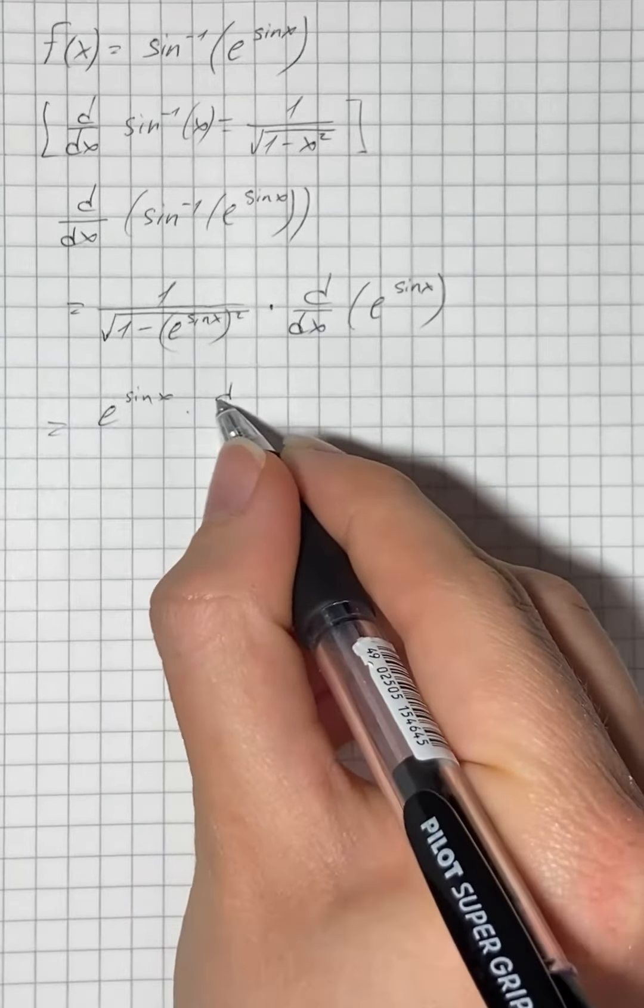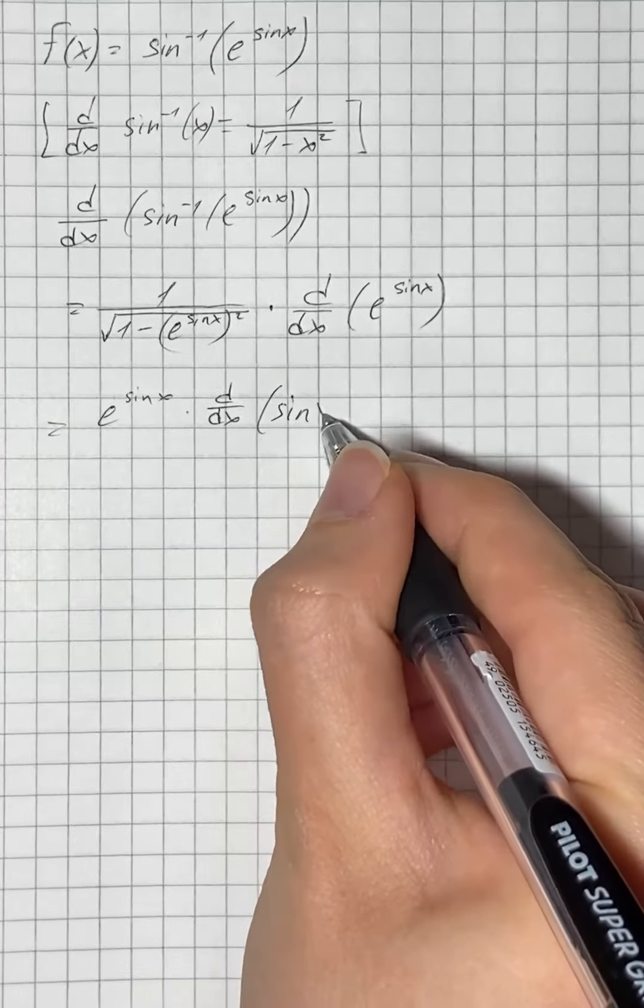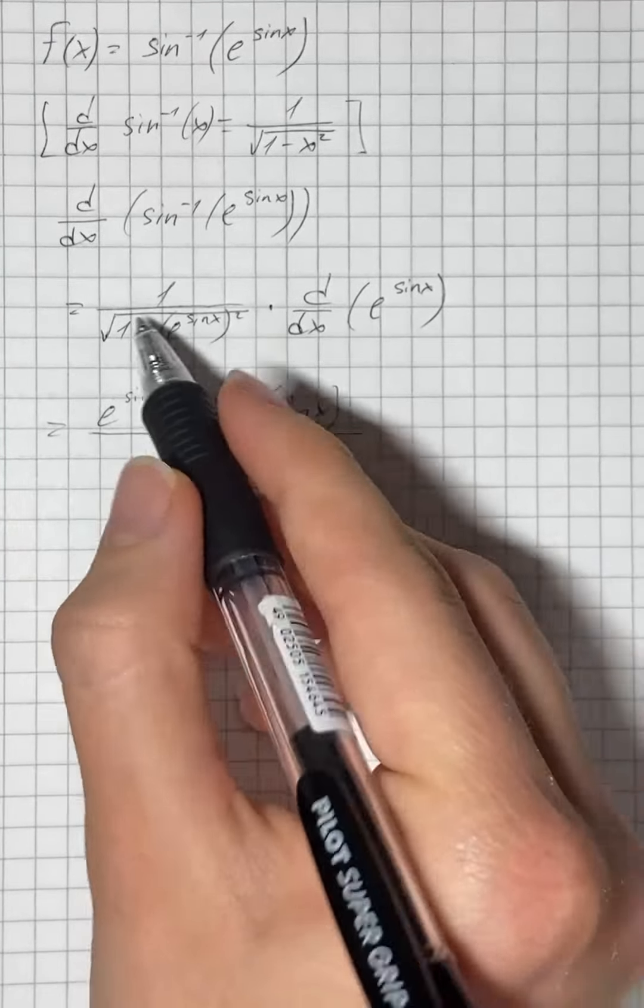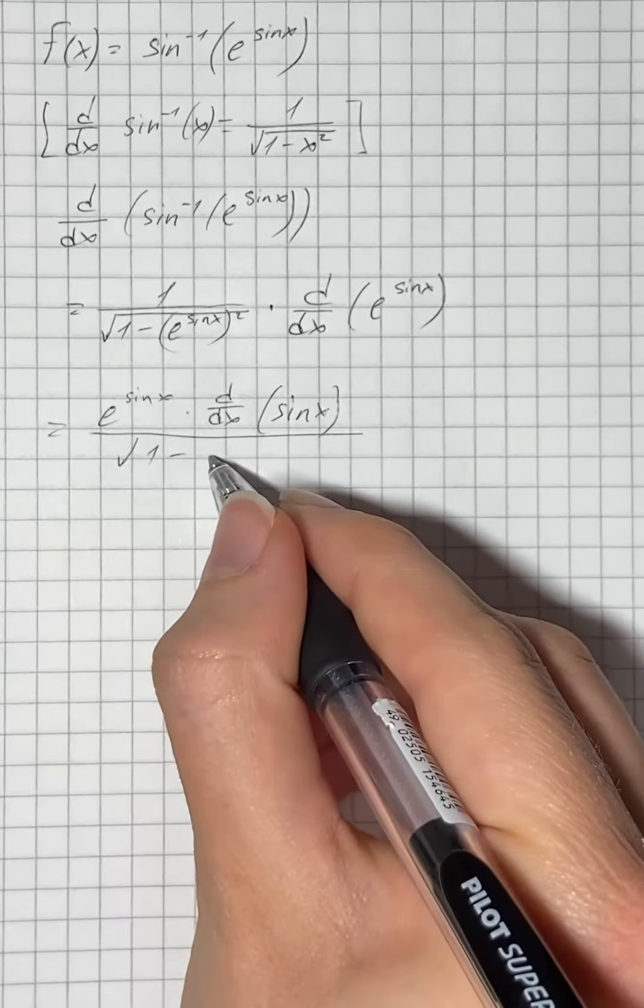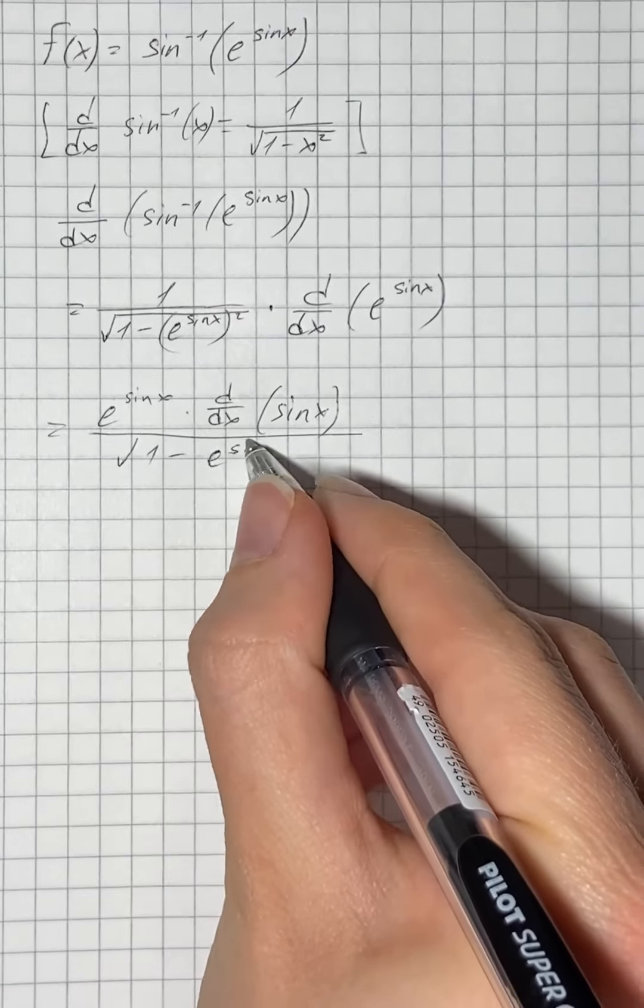And multiply by the derivative of sine of x. In the denominator, we have the square root of 1 minus e to the power of sine of x squared.